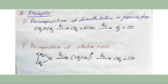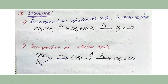Let us see some examples. The first example is the decomposition of dimethyl ether in the gaseous phase: dimethyl ether converts to methane and formaldehyde, and that formaldehyde further decomposes to form hydrogen and carbon monoxide. The second example is the decomposition of ethylene oxide, which forms acetaldehyde (CH₃CHO) in an excited state, which then decomposes to form methane and carbon monoxide.